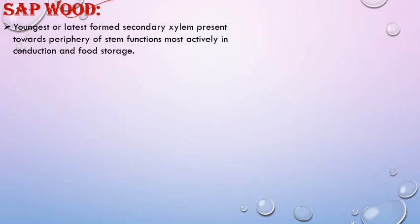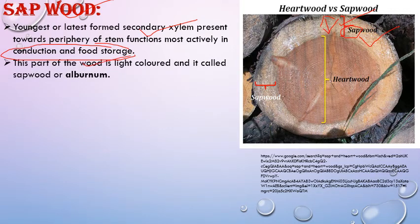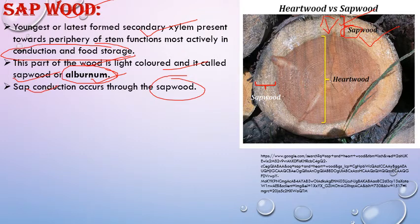Next is sapwood and heartwood. Sapwood is the outer peripheral, youngest, latest-formed secondary xylem which is living. It is the outer side of the stem — light in color, young, most active, and helps in conduction of water and food. This light-colored outer portion is called sapwood because it helps in conduction of sap, as it contains living cells.